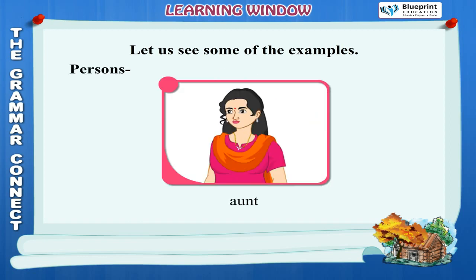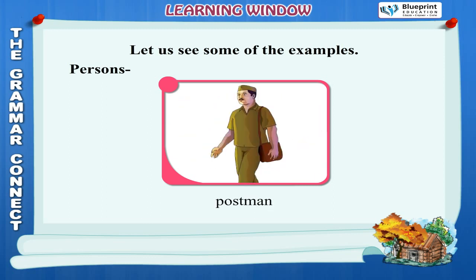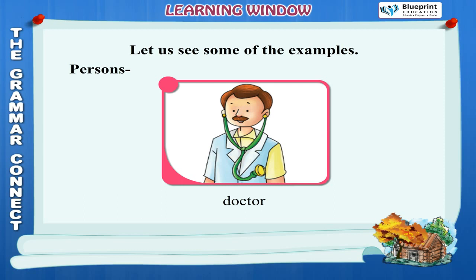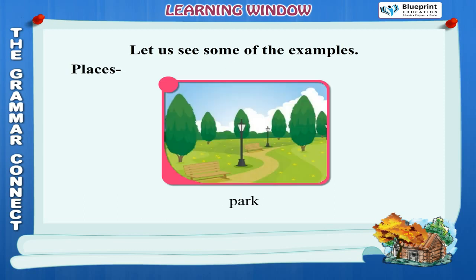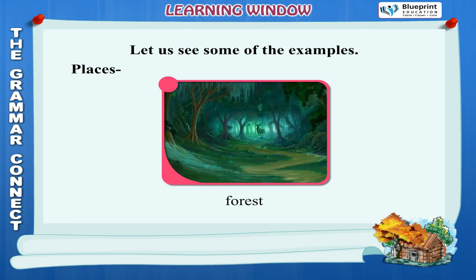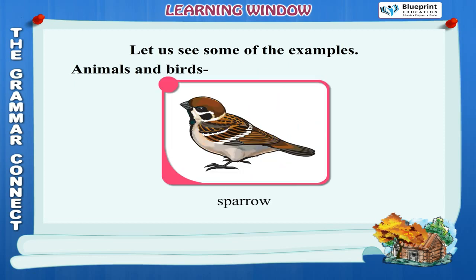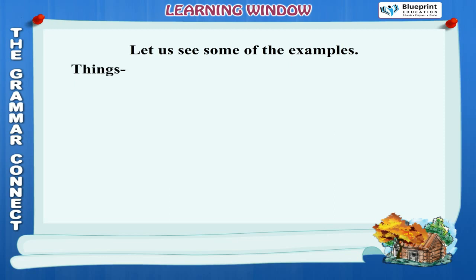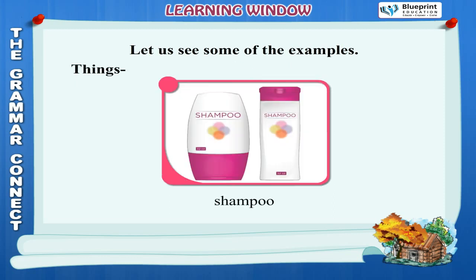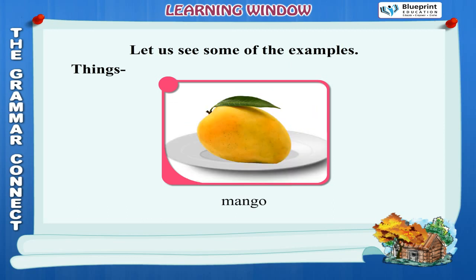Persons: Aunt, Sister, Niece, Postman, Doctor. Places: School, House, Park, Bathroom, Forest. Animals and Birds: Squirrel, Sparrow, Dog, Cat, Giraffe. Things: Shampoo, Flower, Table, Mango, Camera.